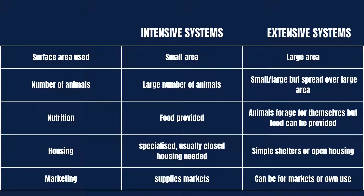In terms of housing, intensive systems typically have closed housing, while in extensive systems there can be shelters but most of the time it's open housing. In terms of marketing, intensive production systems supply the markets, while in extensive systems the produce can be used for marketing but can also be used for subsistence farming.